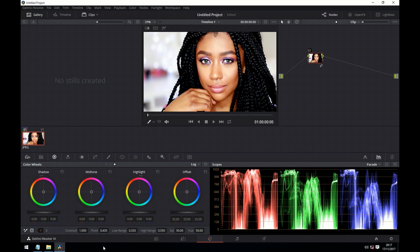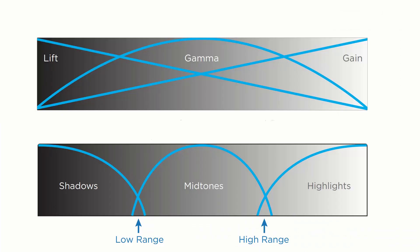I now want to show you a specific setting in log. You can see here we've got the low range and the high range. Let me show you a graph to explain these. The top graph relates to the primaries, and the bottom graph relates to the log. The primaries have a much broader range of selection, and you can see how the overlap between lift, gamma and gain is much greater for primaries than for log. What's good about the log is it gives us quite a lot of flexibility — we can alter the low range or high range to broaden or narrow the overlap.